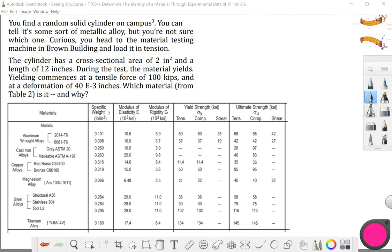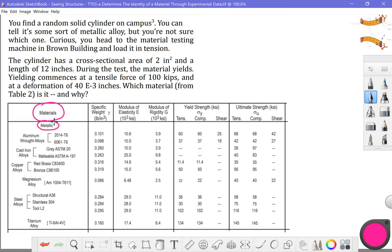We want to compare it to our material properties for these metallic materials. We're looking at some aluminum alloys, cast iron alloys, copper alloys and magnesium alloy, three steel alloys and titanium alloy. This table is taken from the reference book for the fundamentals of engineering exam.